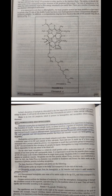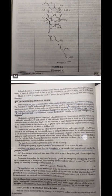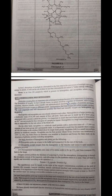In brief, absorption of sunlight by chlorophyll is the first step in the conversion of sunlight into usable energy by a plant. It will not be out of place to say that chlorophylls are nature's solar energy collectors. Heme is an iron porphyrin which is present in hemoglobin and myoglobin, which is being discussed. Hemoglobin and myoglobin: molecular oxygen plays an important role in biological systems because of its importance in respiration.